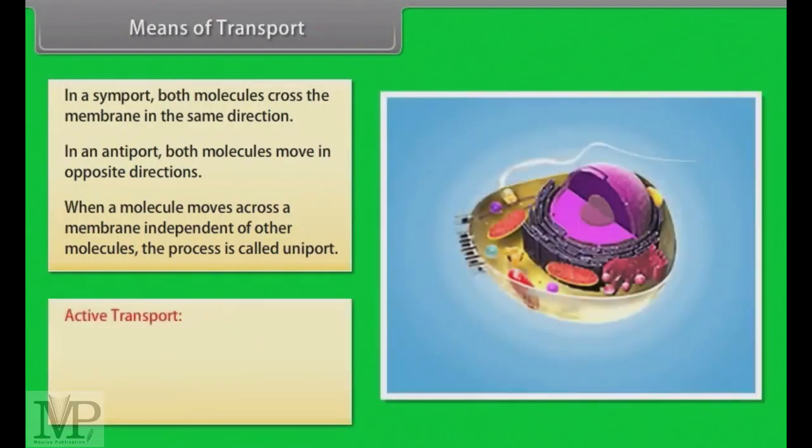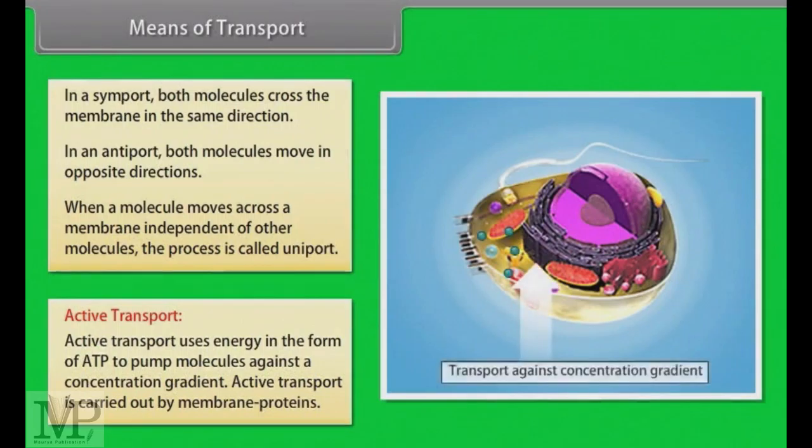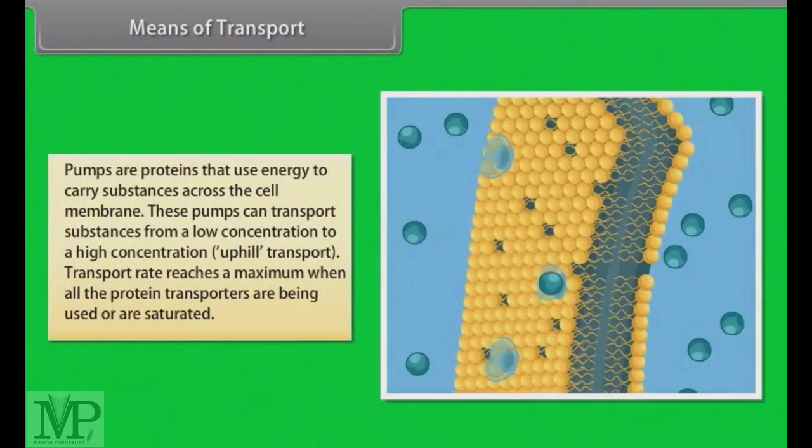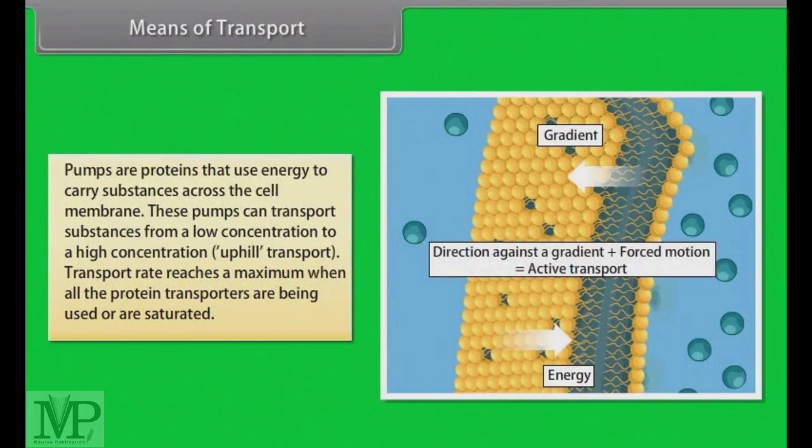Another mean of transport is active transport. Active transport uses energy in the form of ATP to pump molecules against a concentration gradient. Active transport is carried out by membrane proteins. Hence, different proteins in the membrane play a major role in both active as well as passive transport. Pumps are proteins that use energy to carry substances across the cell membrane. These pumps can transport substances from a low concentration to a higher concentration or uphill transport. Transport rate reaches a maximum when all the protein transporters are being used or are saturated.